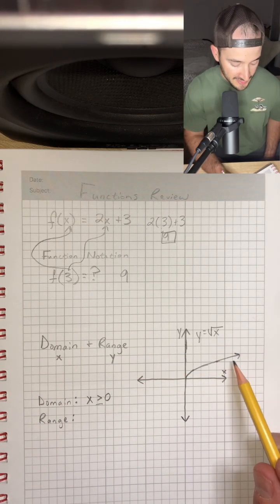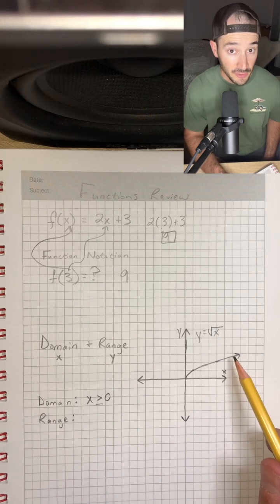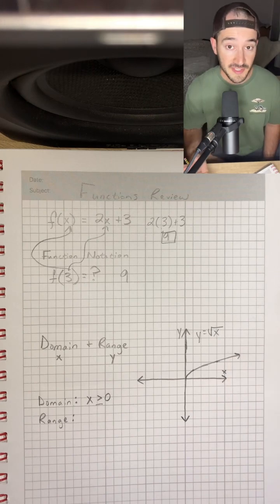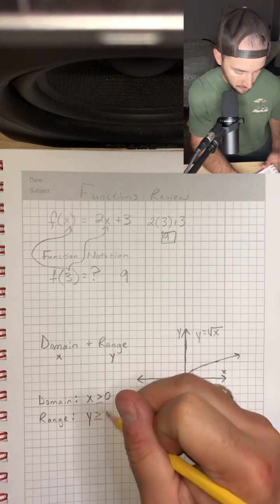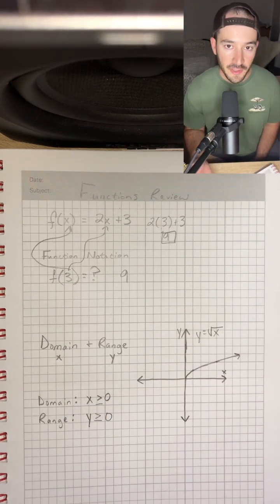And it's not increasing super fast, but it is going to keep increasing over time. So eventually, it's just going to go to infinity. So our range would be y is greater than or equal to 0, kind of similar to the domain.